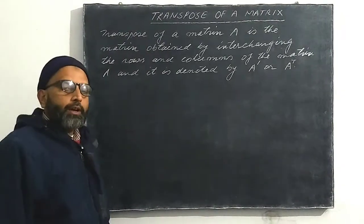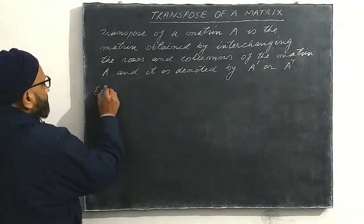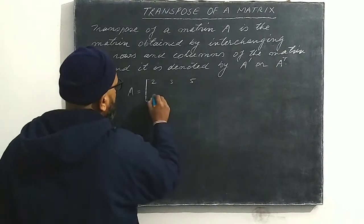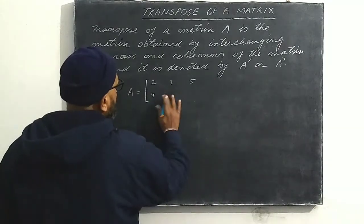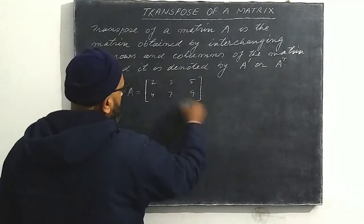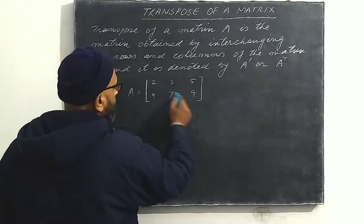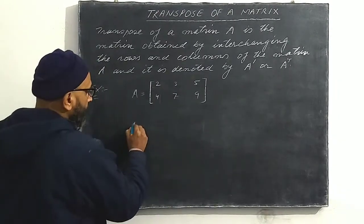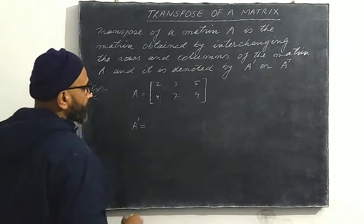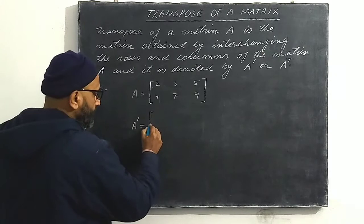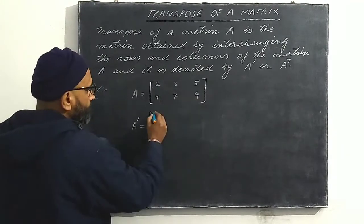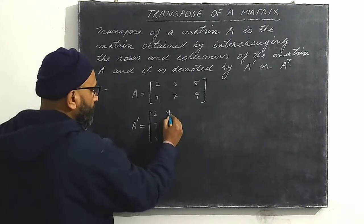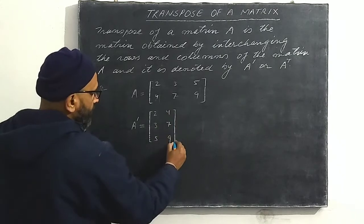For example, A is a matrix with rows: two, three, five and four, seven, nine. These are the rows and these are the columns of matrix A. If we interchange these rows and columns, we get the transpose of A, denoted A dash. The first row becomes the first column: two, three, five, and the second row becomes the second column: four, seven, nine.